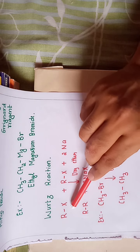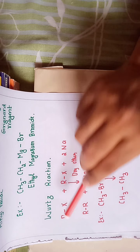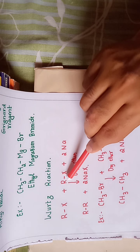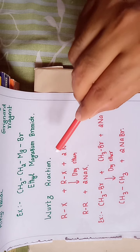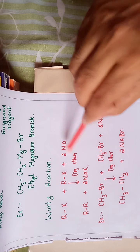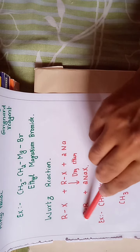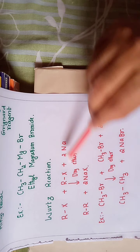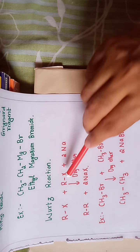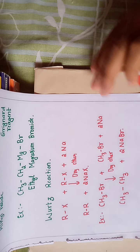For example, with one alkyl group RX and another RX, when treated with sodium you get the higher alkane R-R, plus NaX as a byproduct. This is the Wurtz reaction.